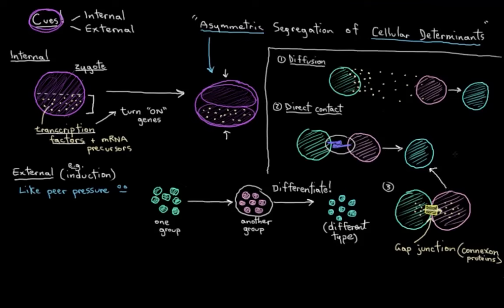And I call this a connexon because in cellular biology these proteins that make up part of a gap junction are collectively called a connexon. Anyway, induction is absolutely key in forming lots of our body parts.